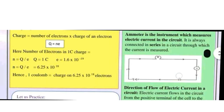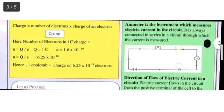as shown here, that one coulomb charge has 6.25 into 10 to the power 18 electrons. How can you define a coulomb of charge? This question is very important.